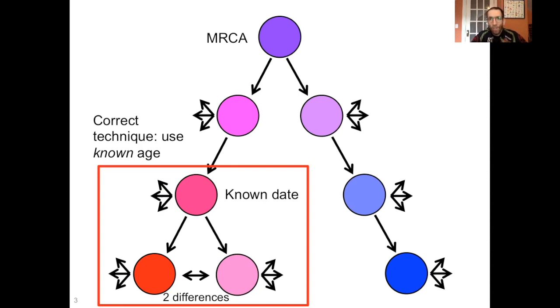The correct technique to figure this kind of thing out is to use a known age where two different groups diverged at a known time, and then make your substitution rate based on the differences in those groups. And we can do this, for example, with things like the settlement of the Canary Islands, which was only around 2000 years ago. We can look at that population and nearby populations and see how different they are and figure out the rate at which differences accumulate.